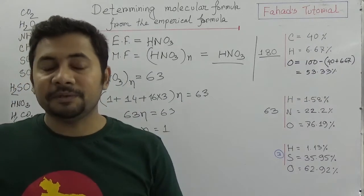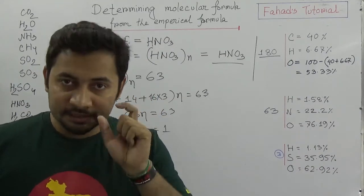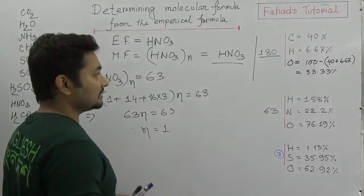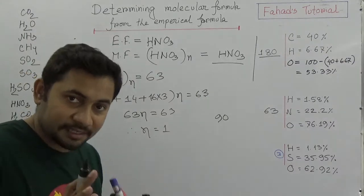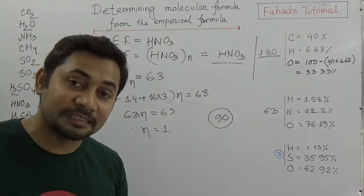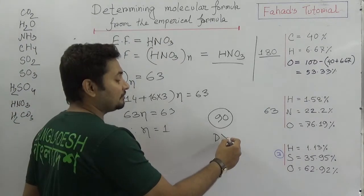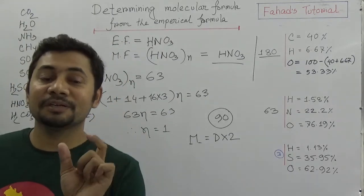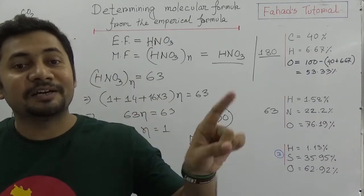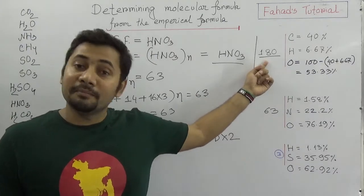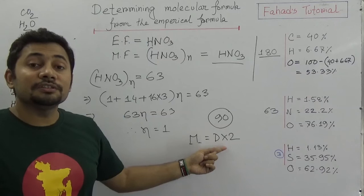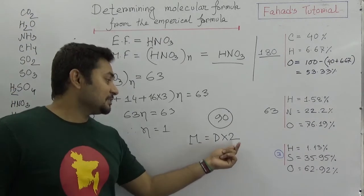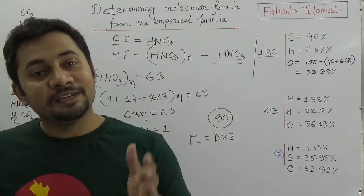In some cases in a question paper, you can have the vapor density given instead of molecular mass. If the vapor density is expressed as D, you have to multiply by 2 to find out the molecular mass. So simply, if in your question paper you get that vapor density is given, just multiply by 2 and then you get the molecular mass, and then you can use it here to solve your problems. Do not use the vapor density value directly, otherwise your N would be half of the correct value.